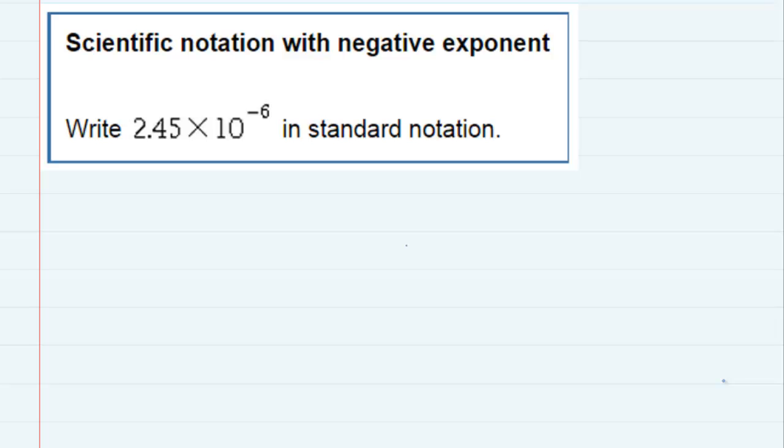Scientific notation with negative exponent. We're asked to write 2.45 times 10 to the negative sixth in standard notation. So it's currently in scientific notation, and it does have a negative exponent.